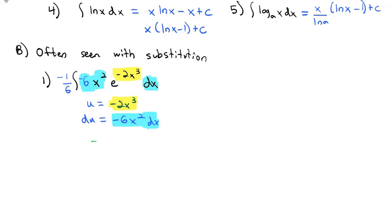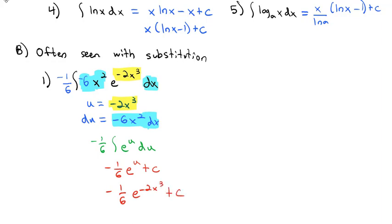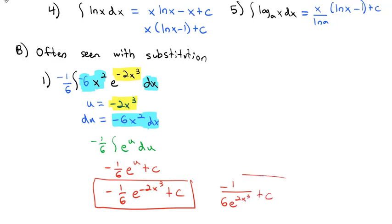We end up with −1/6 times the integral of e^u du, which is a very easy integral. The result is −1/6 · e^u + C, or substituting back, −1/6 · e^(−2x³) + C. You could also simplify that as −1/(6e^(2x³)) + C.